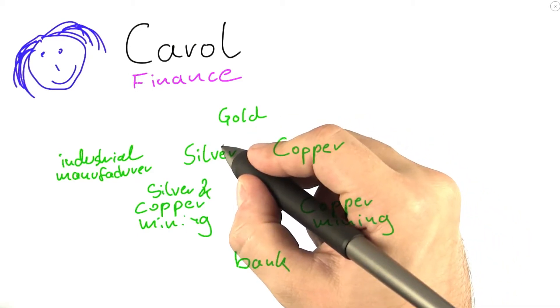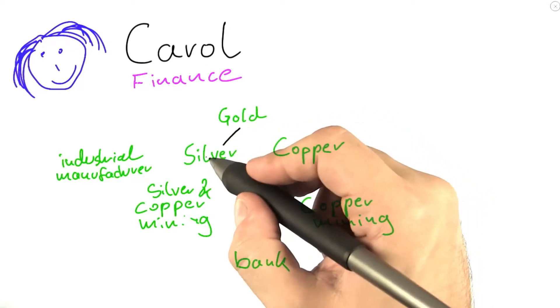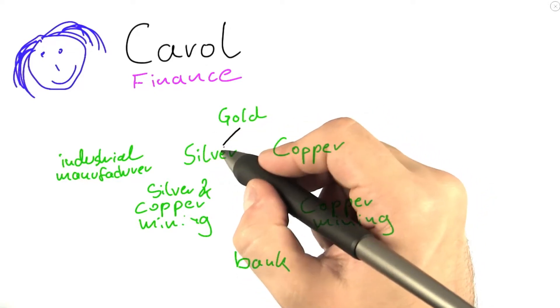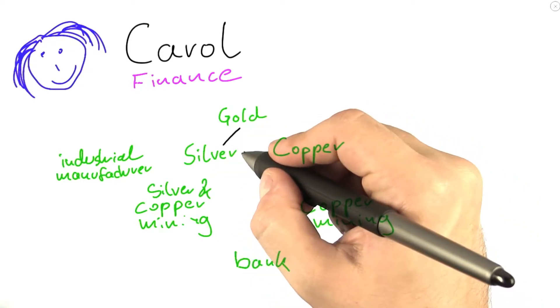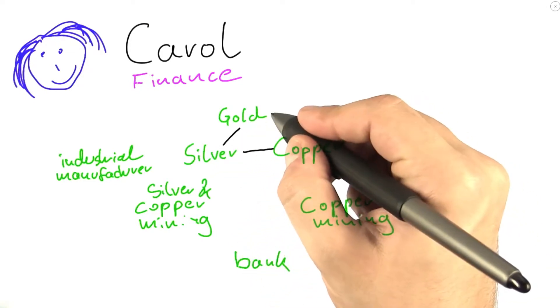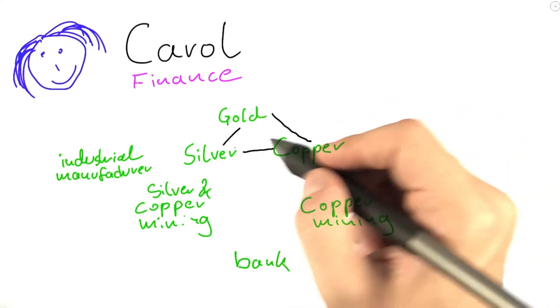So for example, she wants to invest either in gold or in silver, but this line here basically tells us that she doesn't want to invest in both at the same time.